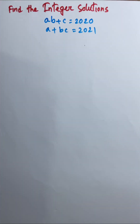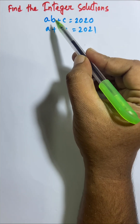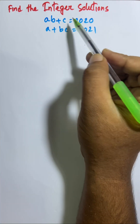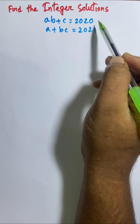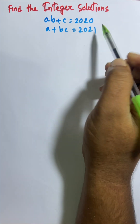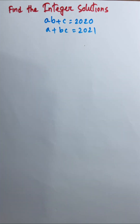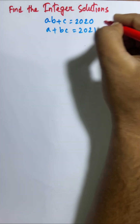Hello everyone. Today I solve this equation — it is a math olympiad question. a plus a(b plus c) is equal to 2020, and a plus bc is equal to 2021. So here we have two equations: the first equation and the second equation.